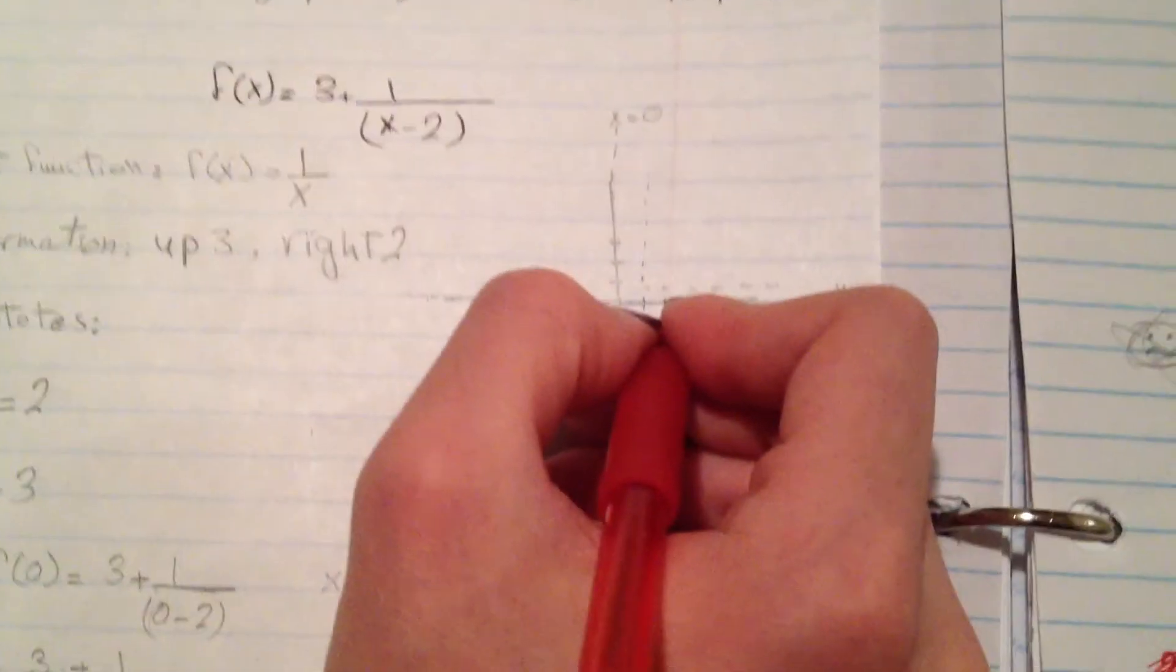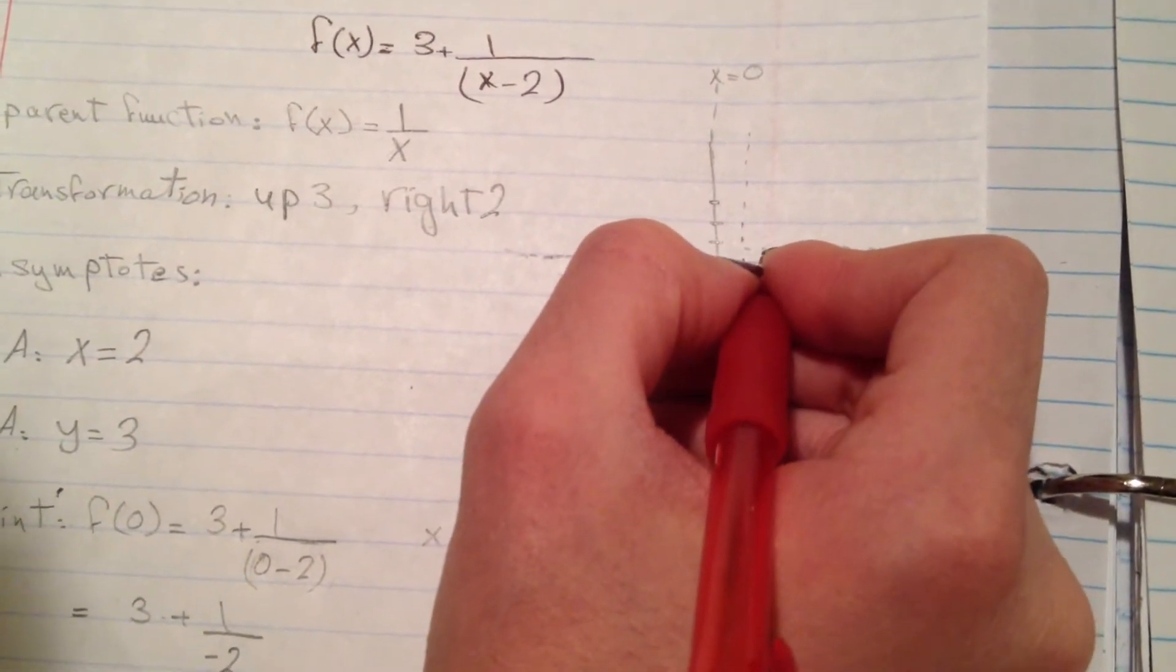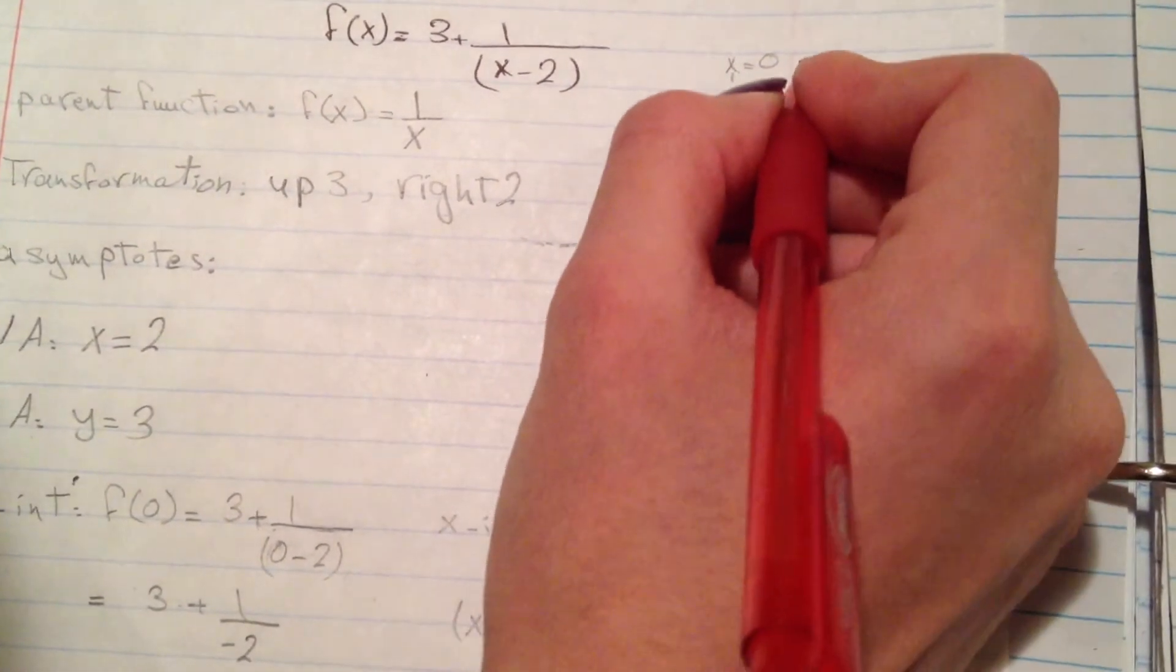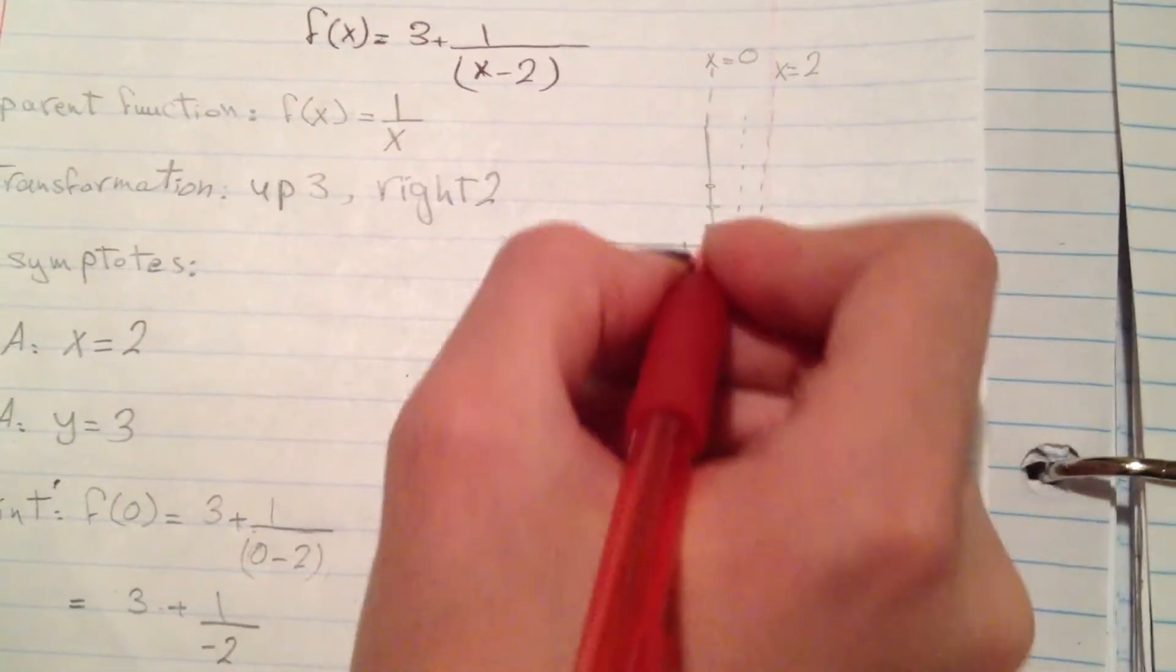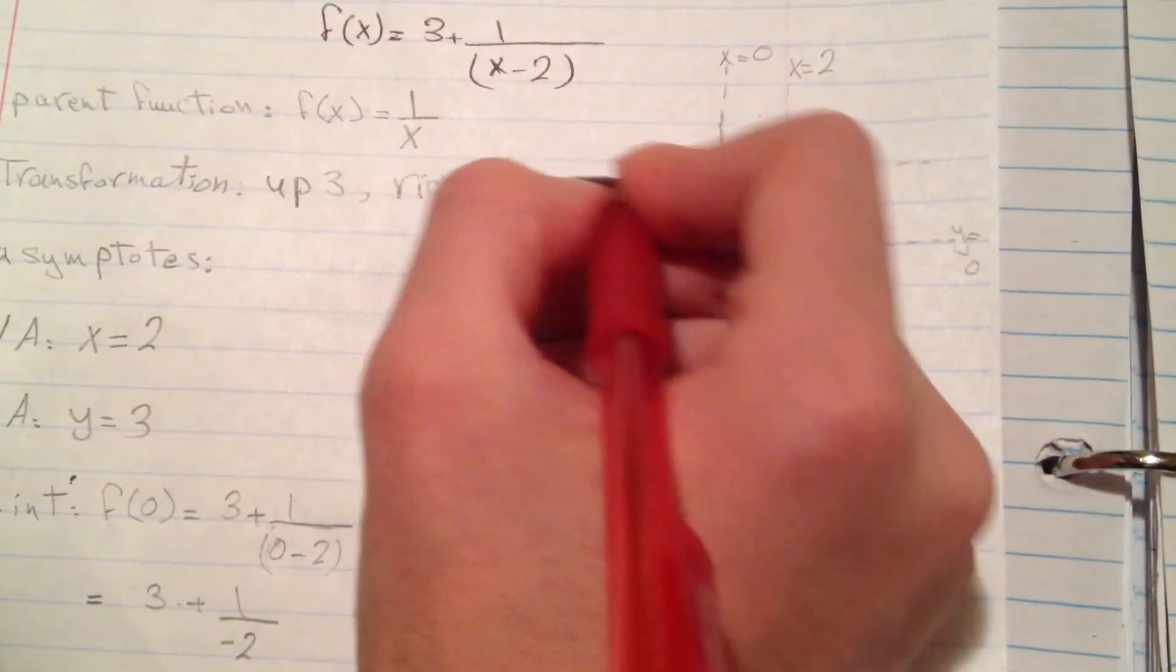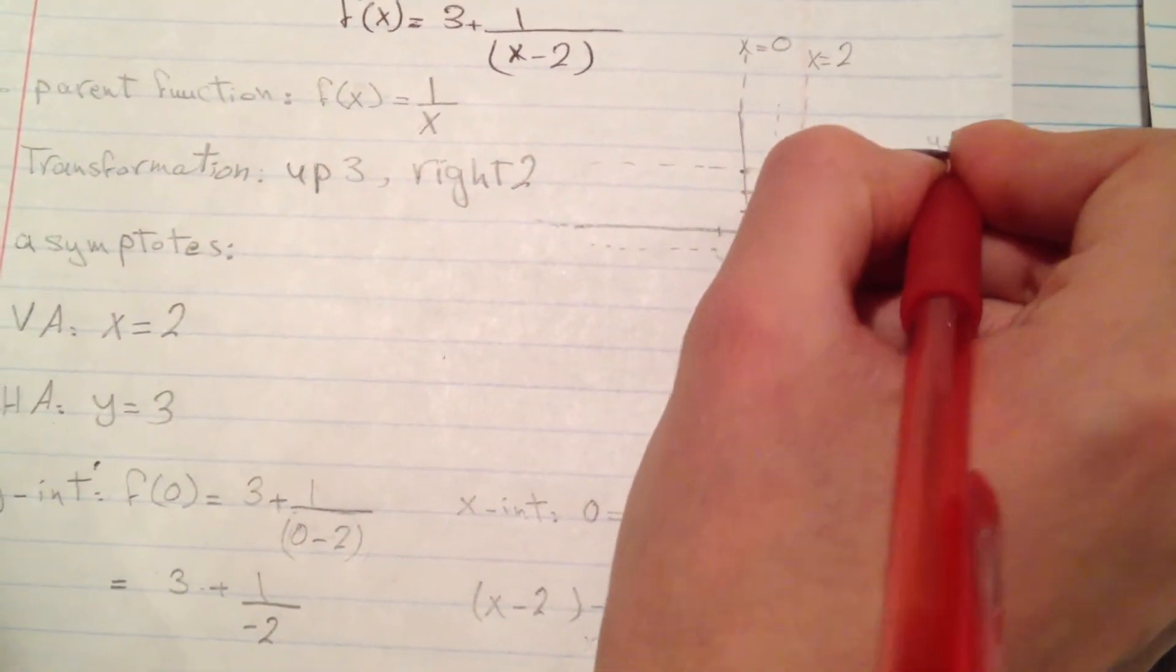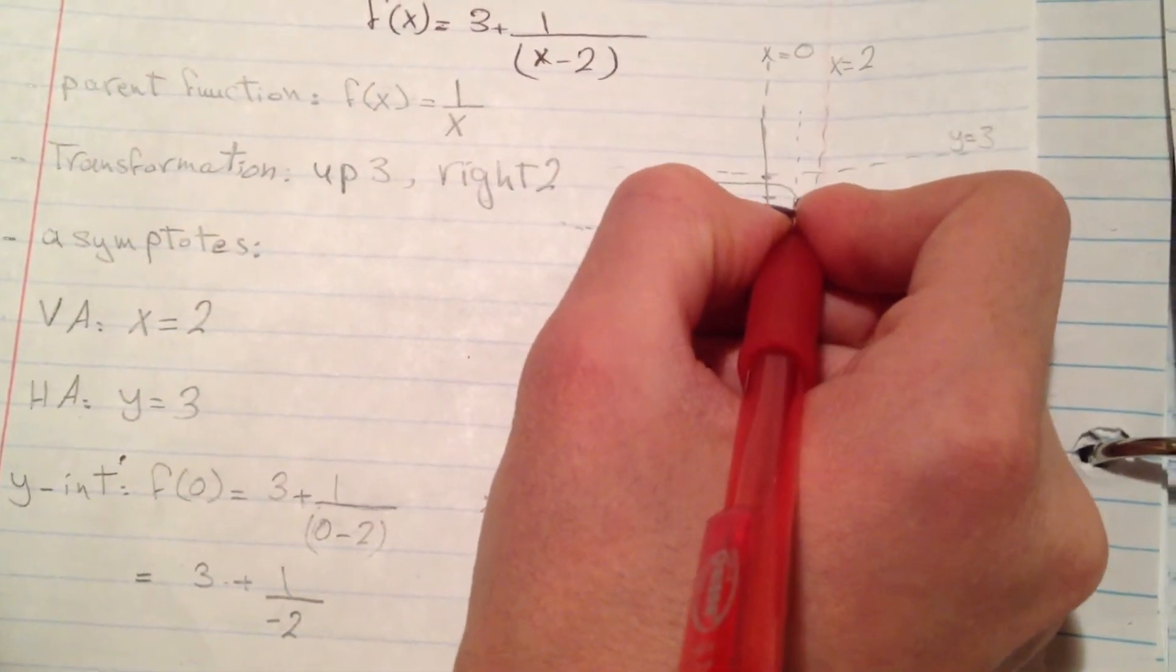Now we're going to graph the function. We have the vertical asymptote at x = 2 and horizontal asymptote at y = 3, and now we'll draw it.